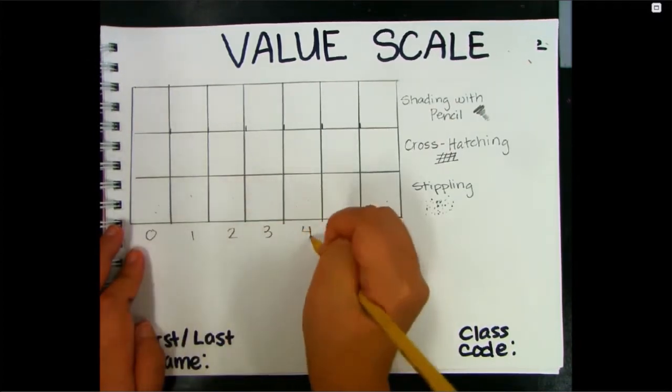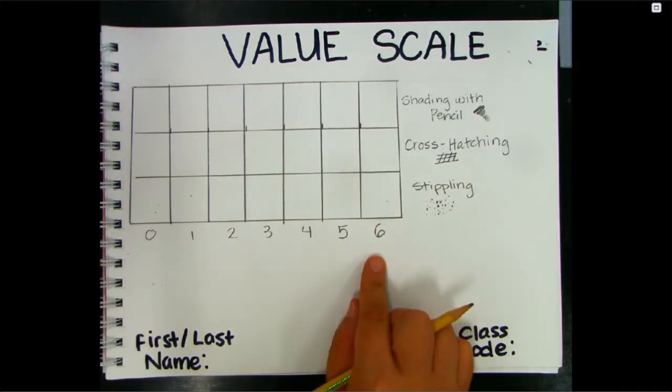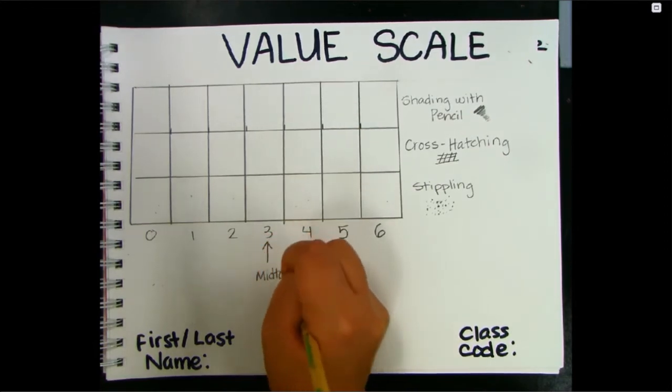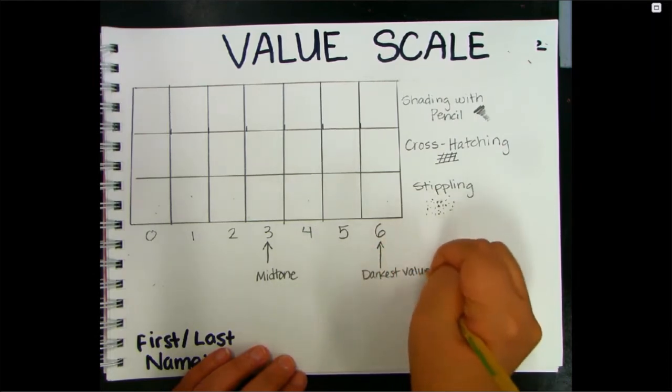I want you to start by numbering them zero to the number six. Number three, please write 'midtone' or 'middle tone.'